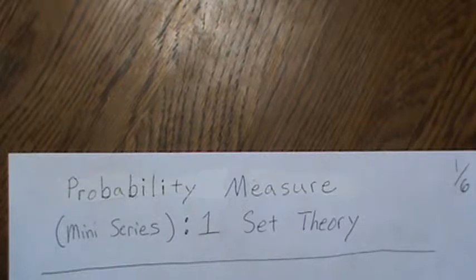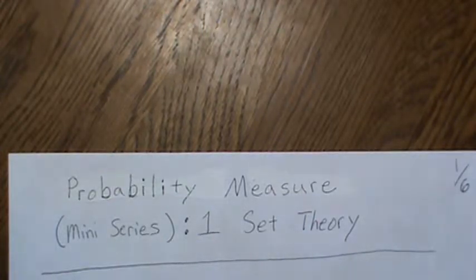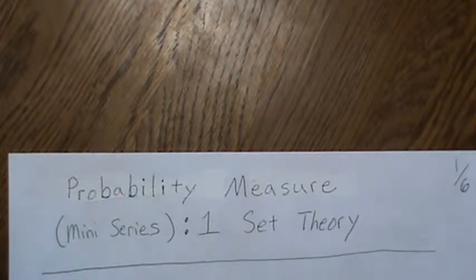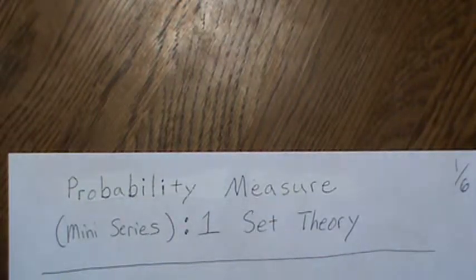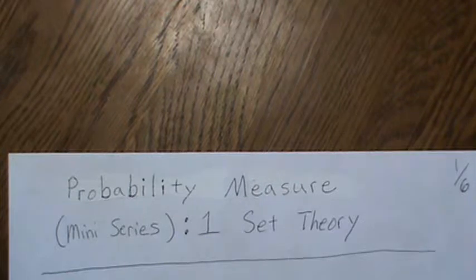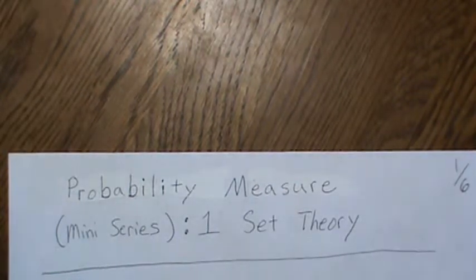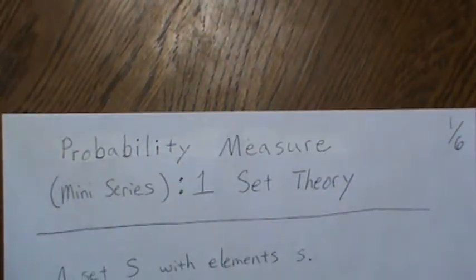So the first one — and since probability measures are heavy into set theory or set-theoretic results, the first talk is on set theory. A lot of this you will go, 'I already knew this,' and that is true, but we will take it to a new level. So we start out slow and then we go up.